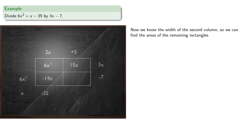But wait, now we know the width of the second column, so we can find the areas of the remaining rectangles. The area of the bottom rectangle is width times height, which will be negative 35. The third bishop diagonal should add to negative 35, and it does, so we're done.